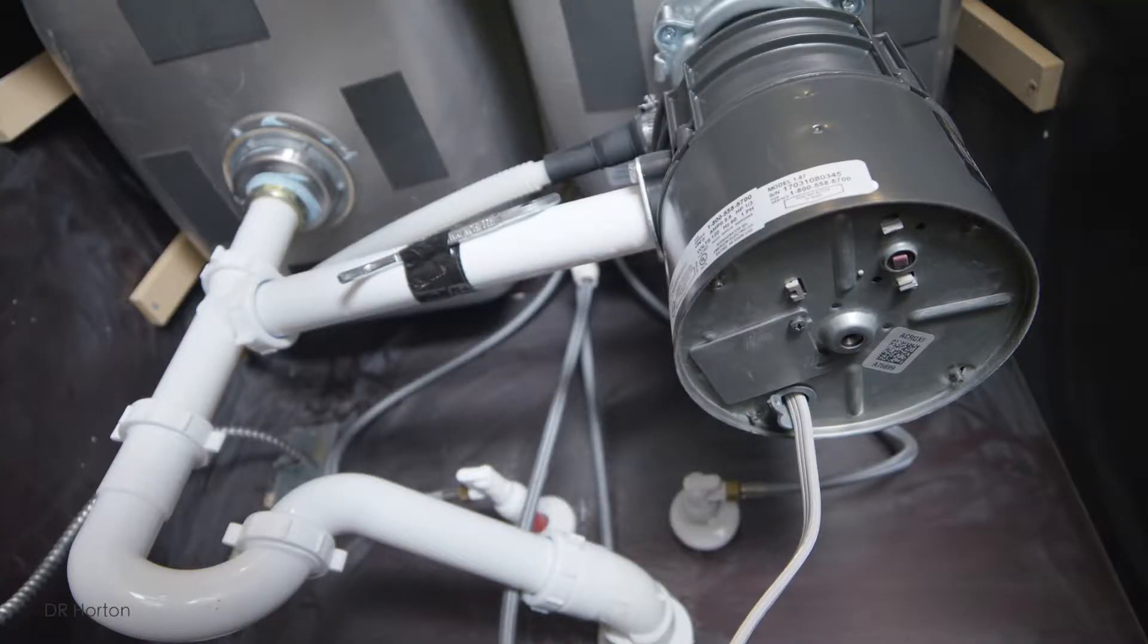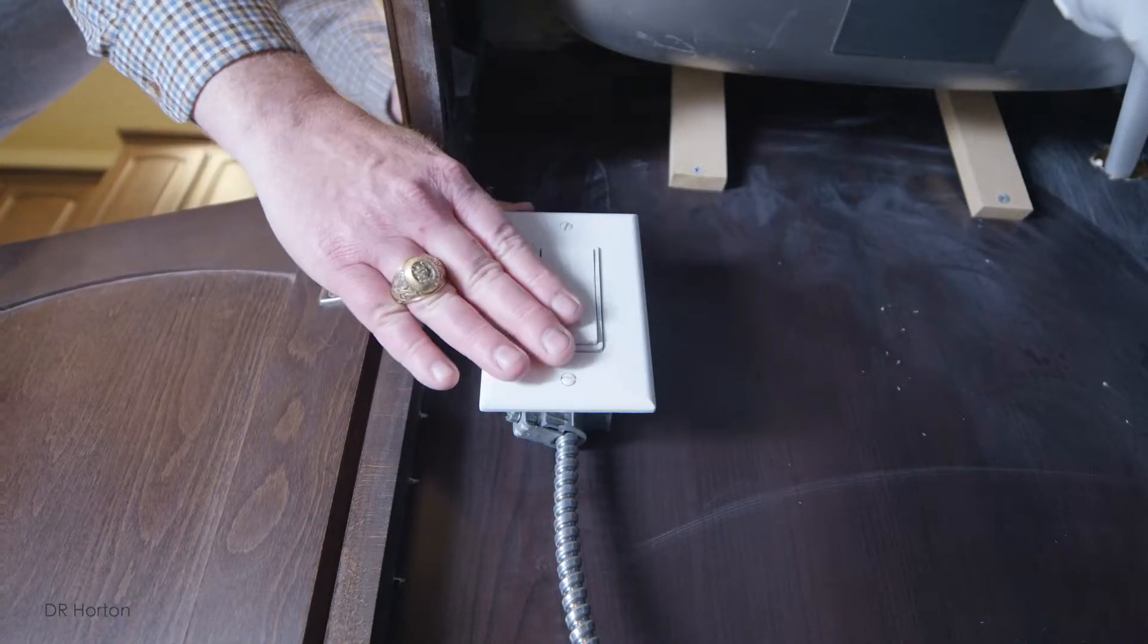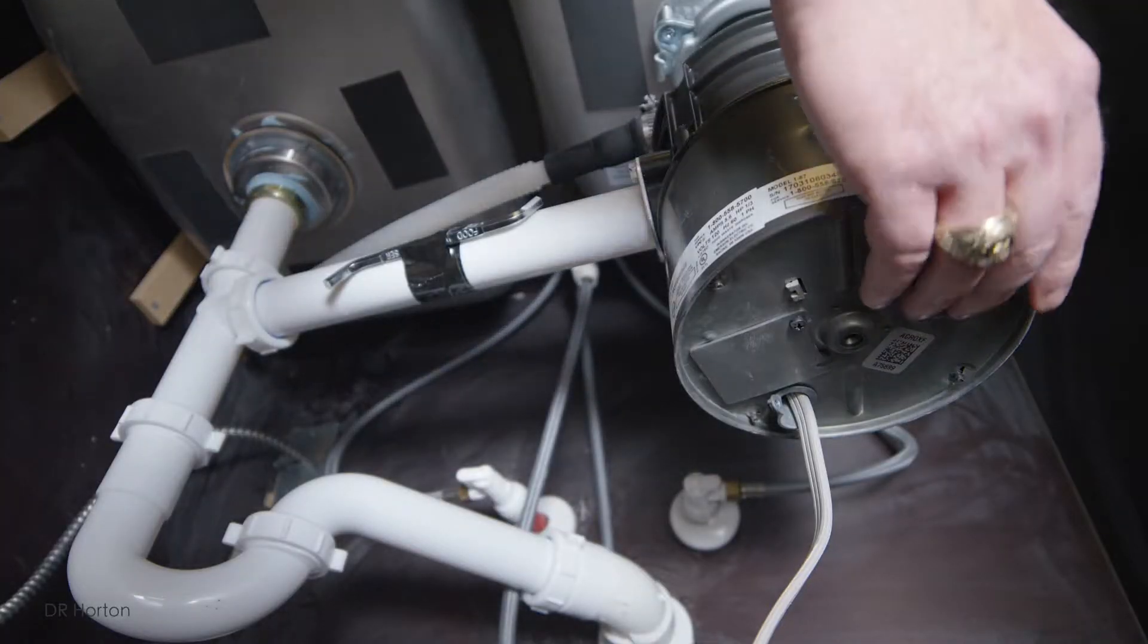Sediment from the sink or dishwasher can settle on the disposal blades, making the unit sound uneven. When this happens, run water and turn the unit on and off. If needed, push the reset button on the bottom of the disposal.